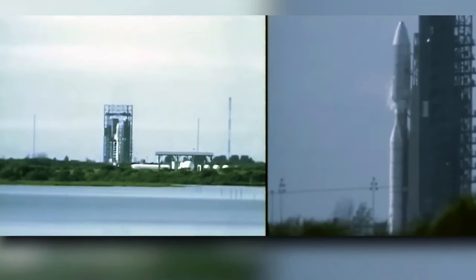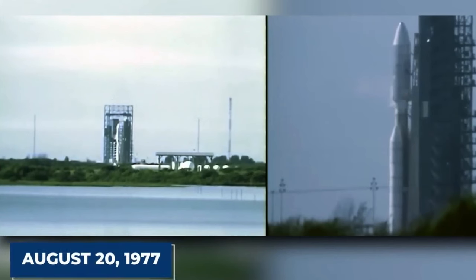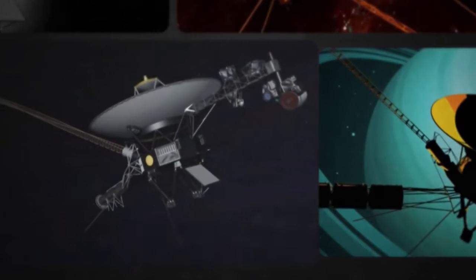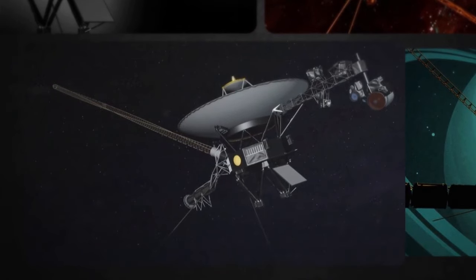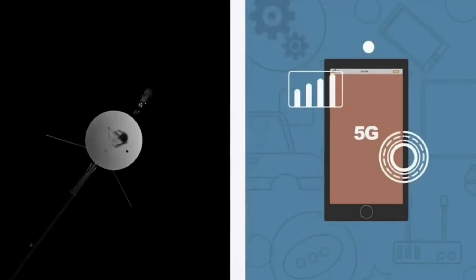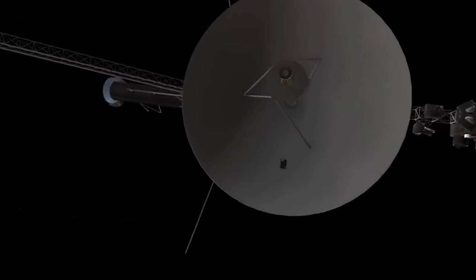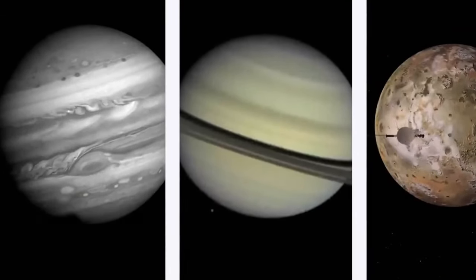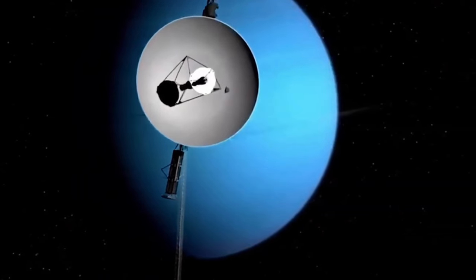NASA also included a golden record containing vital data about humanity on Voyager 1, serving as a message to any extraterrestrial beings it might encounter. This mission required the collaboration of several creative minds, including aerospace engineer Gary Flandro, whose calculations and trajectory planning were crucial to Voyager 1's success.